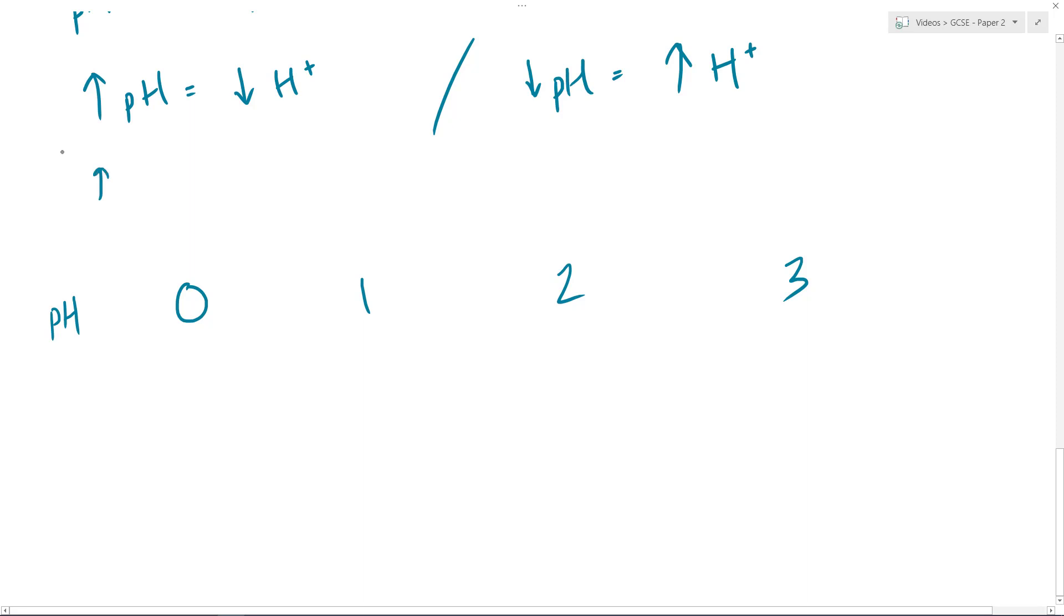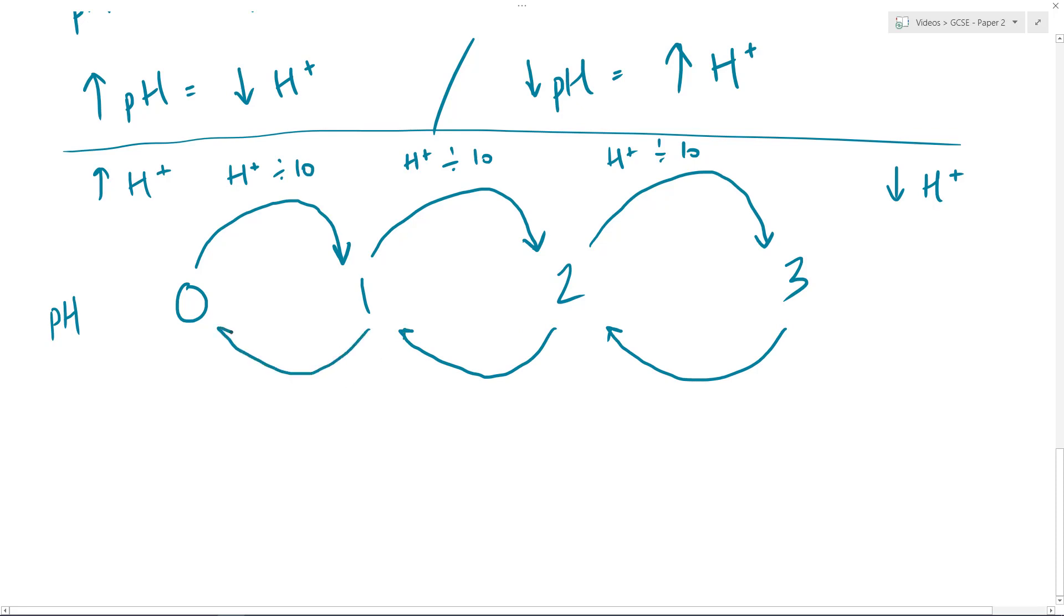Remember what I said, over this end, we have lots of H+, and down this end, we have less H+. Now what we find is that as we go up a pH unit, up a pH unit, up a pH unit, the concentration of hydrogen ions goes down by a factor of 10 each time we jump across. The complete opposite is true going the opposite way. We go up by a factor of 10. So hydrogen ions go up by 10, hydrogen ions go up by 10, and hydrogen ions go up by 10.